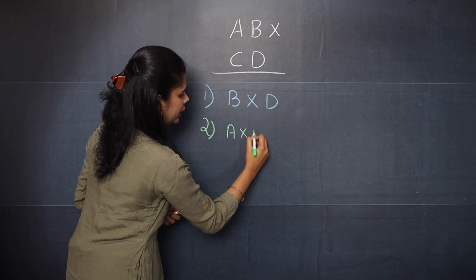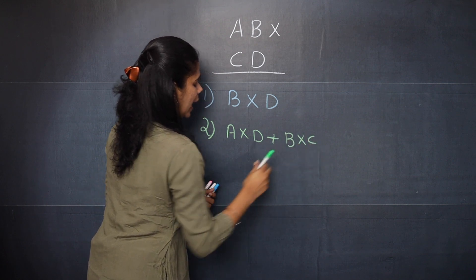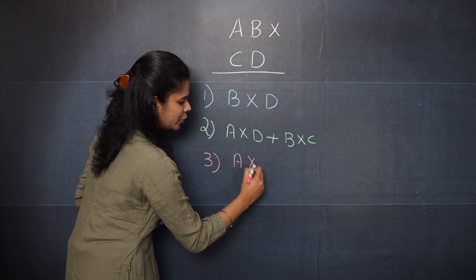That is A into D plus B into C. And the last step is that you need to multiply A into C.